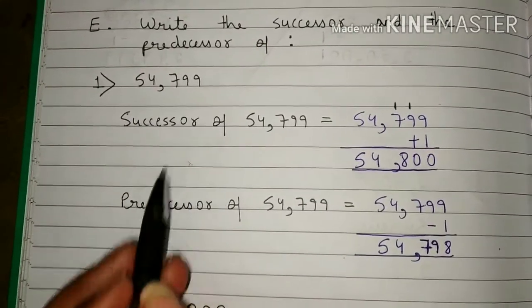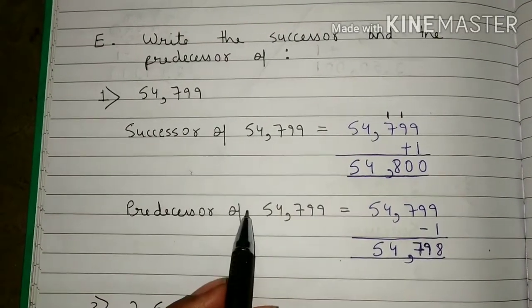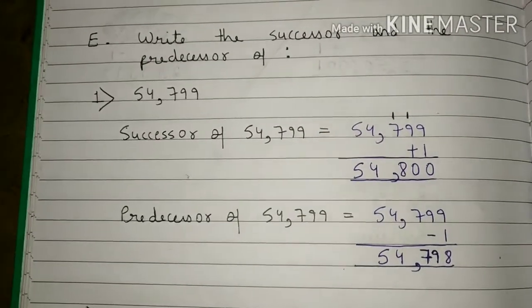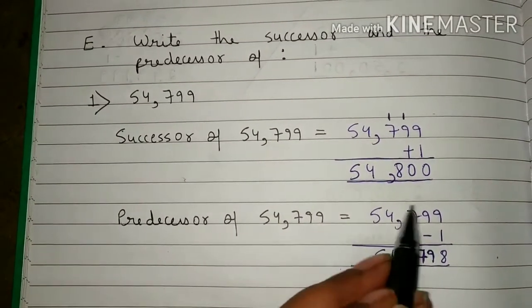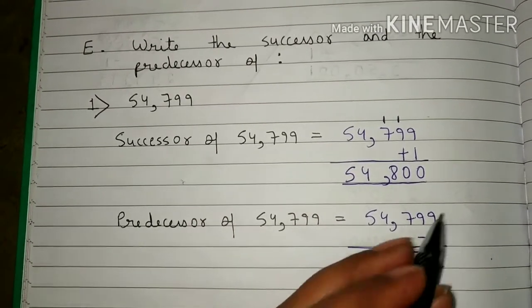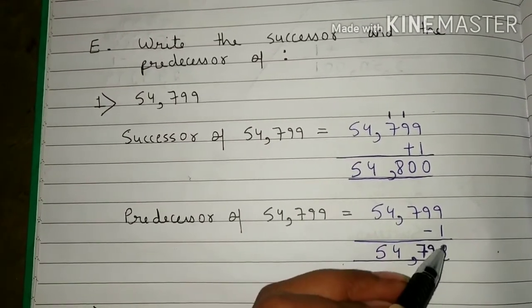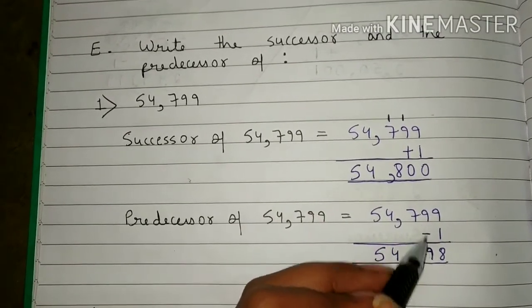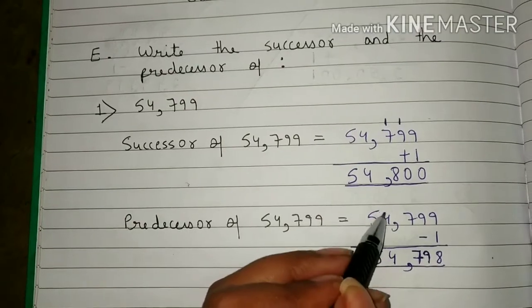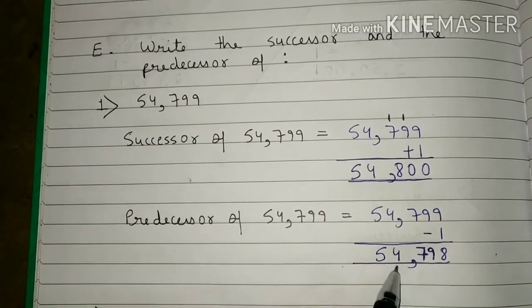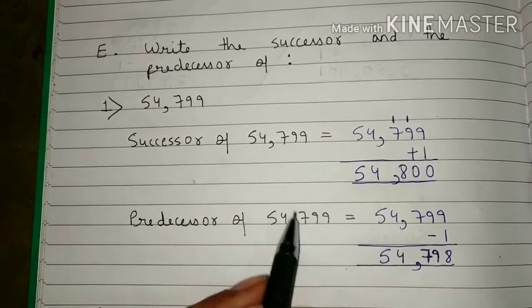Now you will write the predecessor of 54,799. I have told you that for predecessor, you have to subtract 1 from the number. So you will write 54,799 minus 1. Now subtract: 9 minus 1 is 8. Then write 9 as it is, 7 as it is, 4 as it is, 5 as it is. So 54,798 is the predecessor of 54,799.